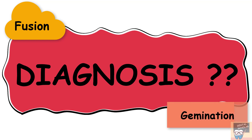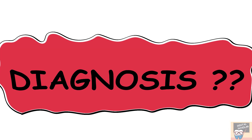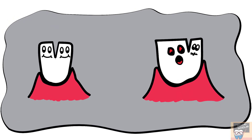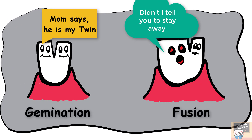There are a few points which would help us differentiate between fusion and partial gemination. The first is morphology. If the involved teeth appear identical then it is a result of gemination, and if the involved teeth appear different or crooked then it is a result of fusion.